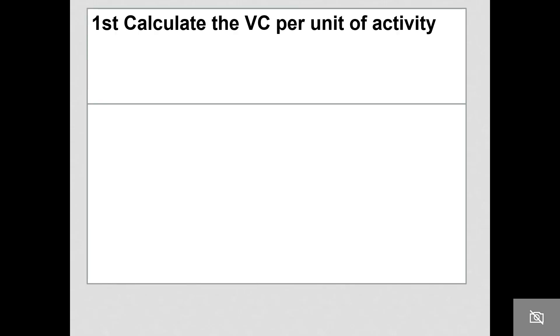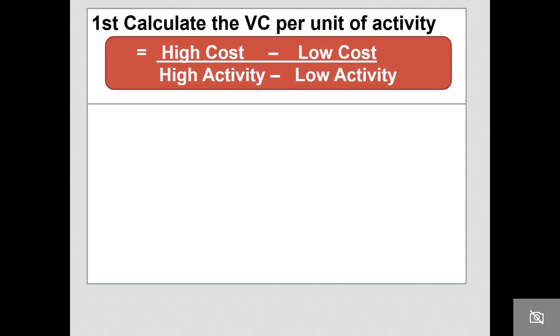To use this method, first calculate the variable cost per unit of activity. The formula is: high cost minus low cost in the numerator, divided by high activity minus low activity in the denominator. You're taking the greatest deviation in your dataset.